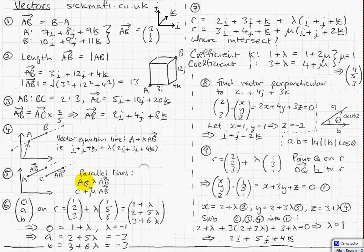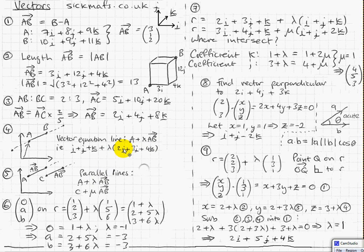We're going to talk about equations of lines that are parallel. If two straight lines have the same direction vector, they're going to be parallel. So to have vector equations of parallel lines, you just need different starting points — if you start from one position and go in that direction, and start from another position going in the same direction, the lines are parallel. Parallel lines in vector form have the same direction vector but different starting points.